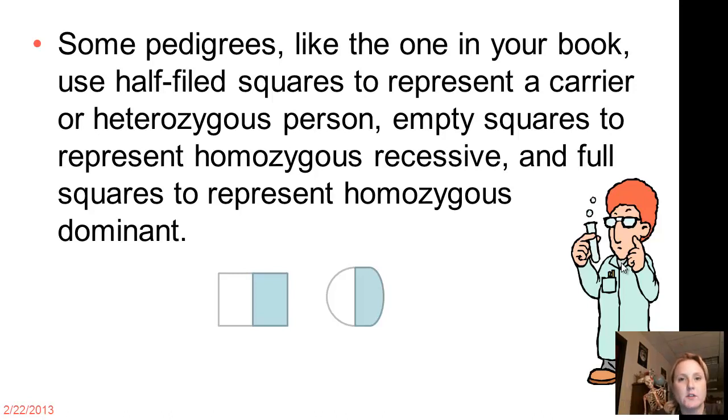So, sometimes in pedigrees, just so you're aware, you will see squares that are half filled in. And this represents somebody who's carrying the trait or the disorder, whether it is dominant or recessive. So somebody who has a capital and a lowercase letter for a disorder will be half shaded in. So you might have a square that's half shaded in or you might have a circle that is half shaded in.